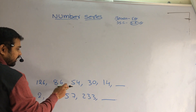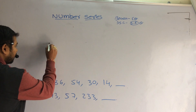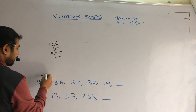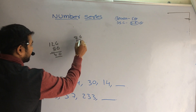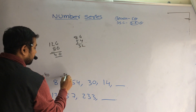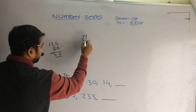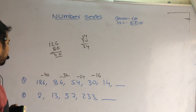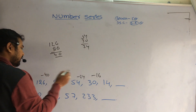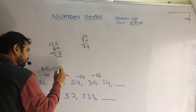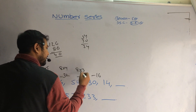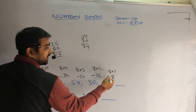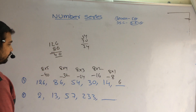So here, the difference is very normal. The differences are 126 and 86. When we subtract 86 from 126, it is 40 — minus 40. And 86 and 54, it is 32 — minus 32. 54 and 34, it is 24. 30 and 14, it is 16. So these are multiples of 8: 8×5, 8×4, 8×3, 8×2. What next? 8 into 1 is 8. When we subtract 8 from 14, it is 6, which is my answer.